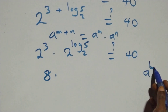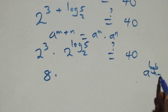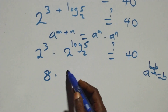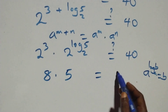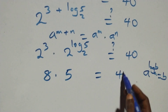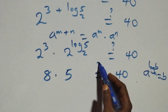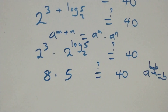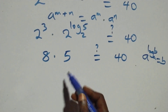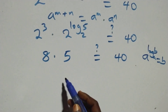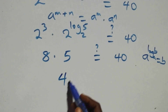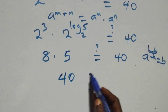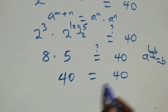This follows when we have a raised to power log_a(b), which equals b. That is here the same thing as 5, which equals 40 on this side. That is, 8 times 5 gives us 40, which equals 40. Left hand side equals the right hand side.